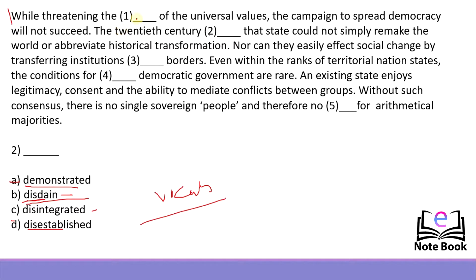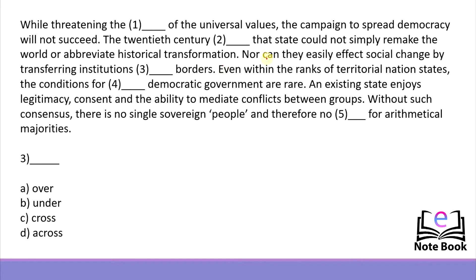Moving ahead: 'Nor can they easily affect social change by transferring institutions blank borders.' He's talking about transferring institutions from one point to another across a border. Whenever we talk like this, the preposition used is 'across' — we always say 'across the borders.' So the most suitable answer is 'across.'